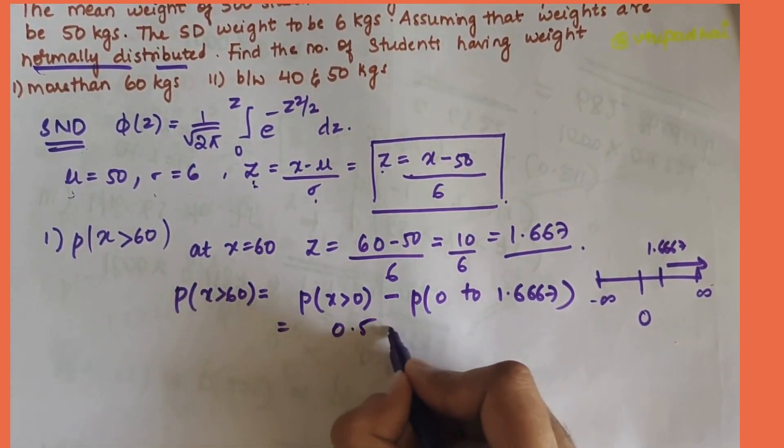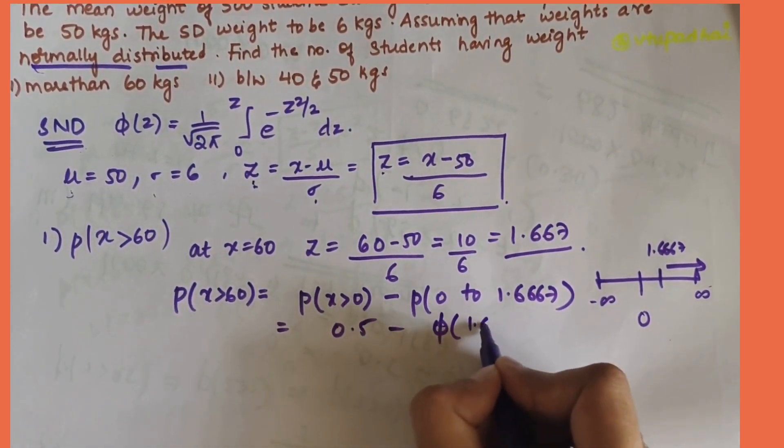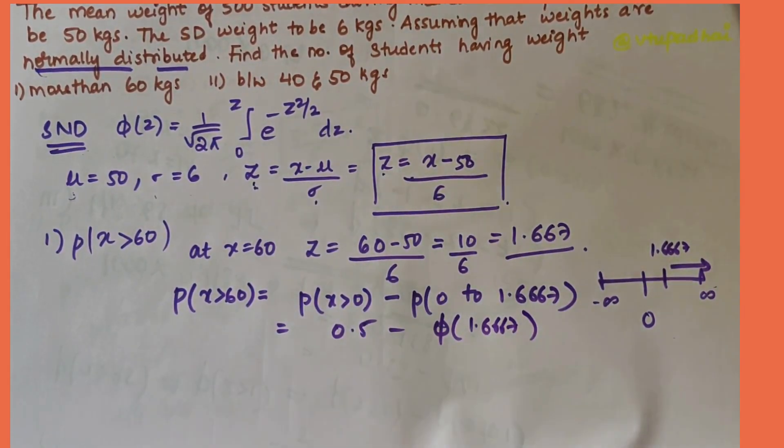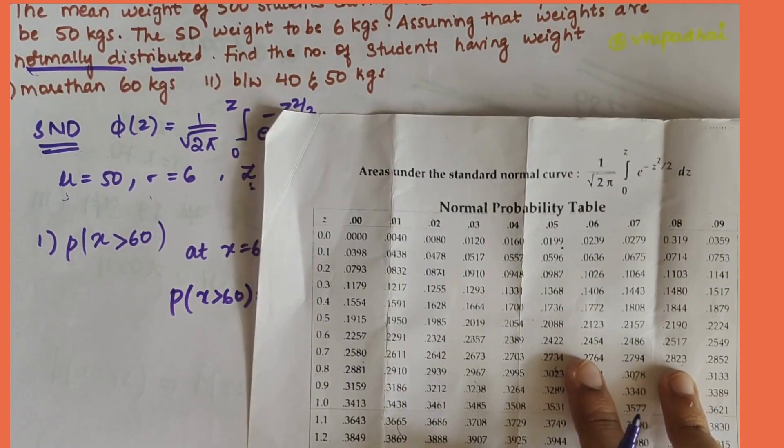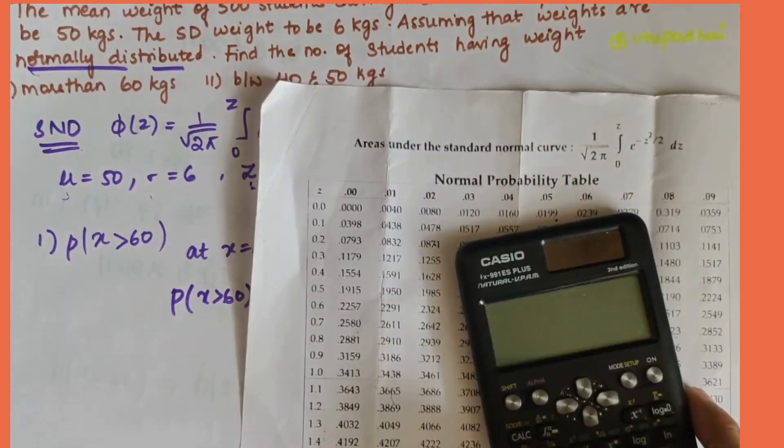Here we get 0.5 minus φ(1.6667). Now you have two options: either you can look at the normal probability table or you can use calculator.